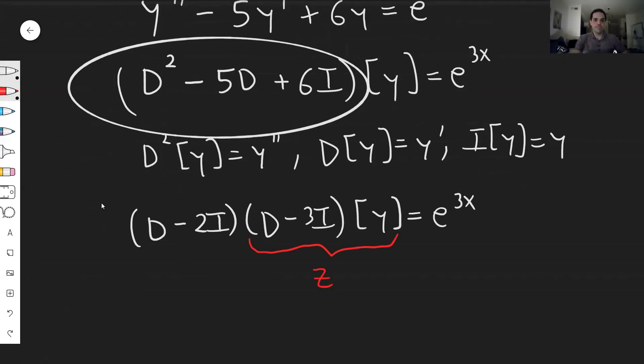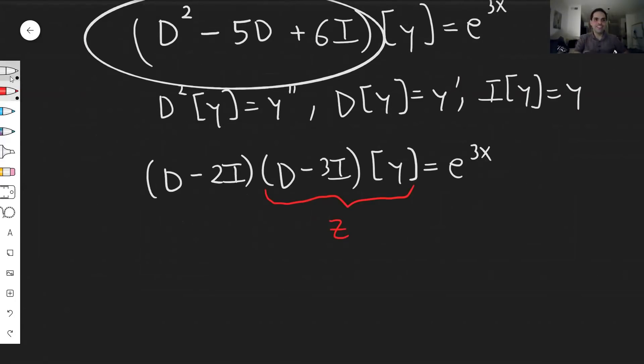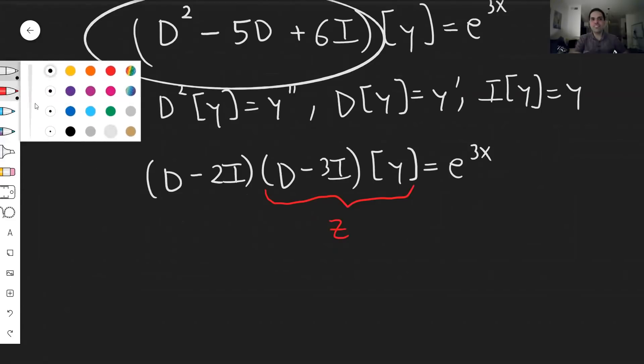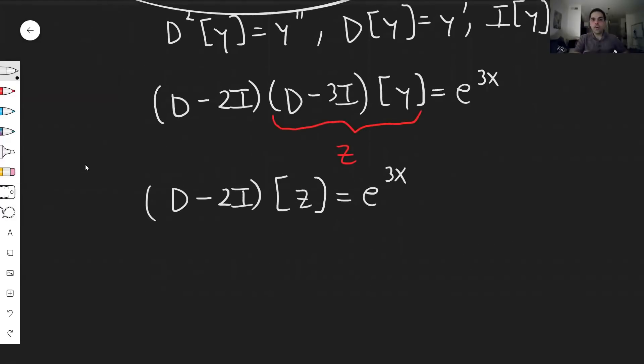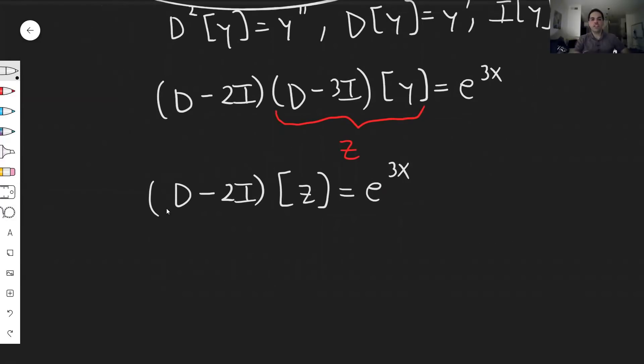Let this be z. Then, and I hope this won't make you dizzy, but you can write the equation as follows. Then this becomes (D - 2I)[z] = e^(3x), which we can now write, using our definition, this becomes z', so z' - 2z = e^(3x).